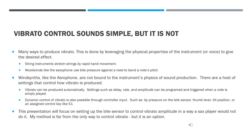There are many ways to produce vibrato by leveraging the physical properties of the instrument or voice to achieve the desired effect. For example, string instruments stretch strings by rapid hand movements, and woodwinds like the saxophone use bite pressure against a reed to bend a note's pitch. But with wind synths like the Aerophone, we aren't bound by these physical constraints — we have a host of settings to control how vibrato is produced.